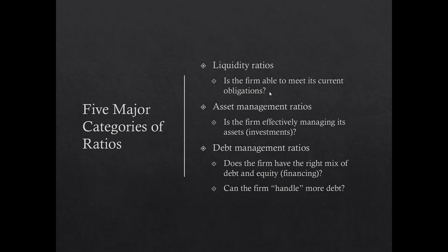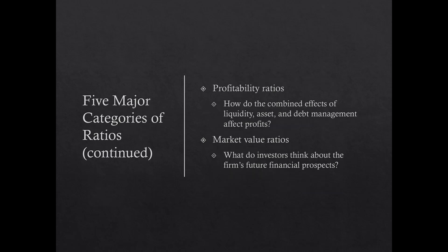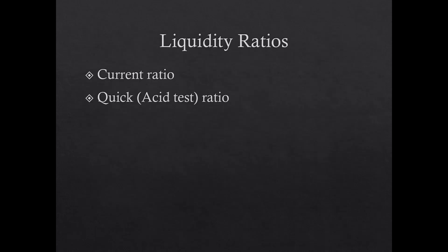There are five major types of ratios: liquidity ratios (can a firm pay its bills?), asset management ratios (how effectively is the firm managing its assets?), debt management ratios (does the firm have the right debt/equity mix and can it handle more debt?), profitability ratios (how do liquidity, asset, and debt management affect profit?), and market value ratios (what do investors think about the company's performance?).